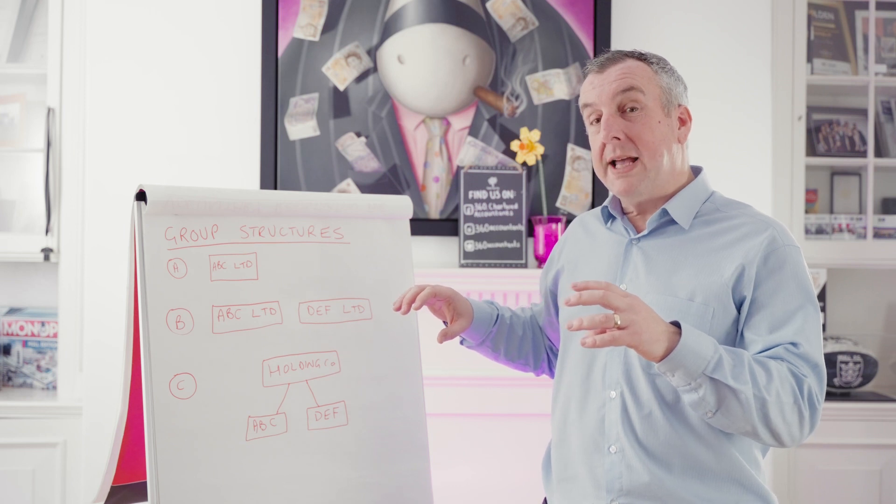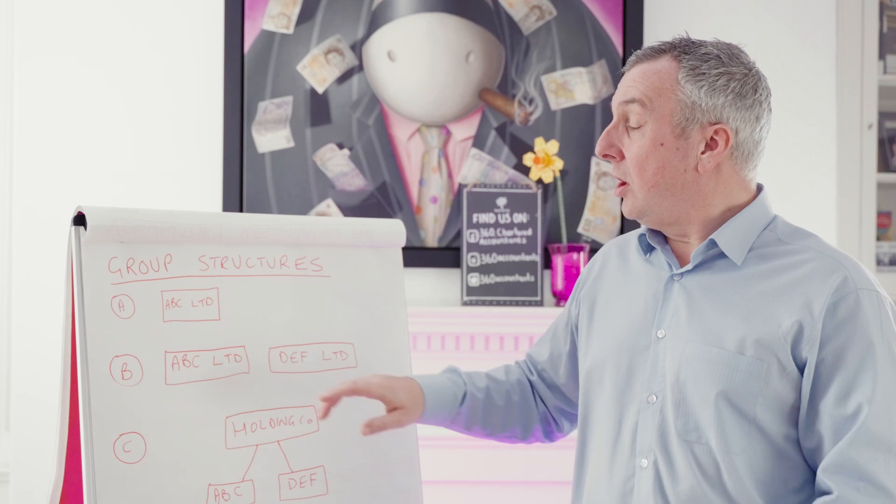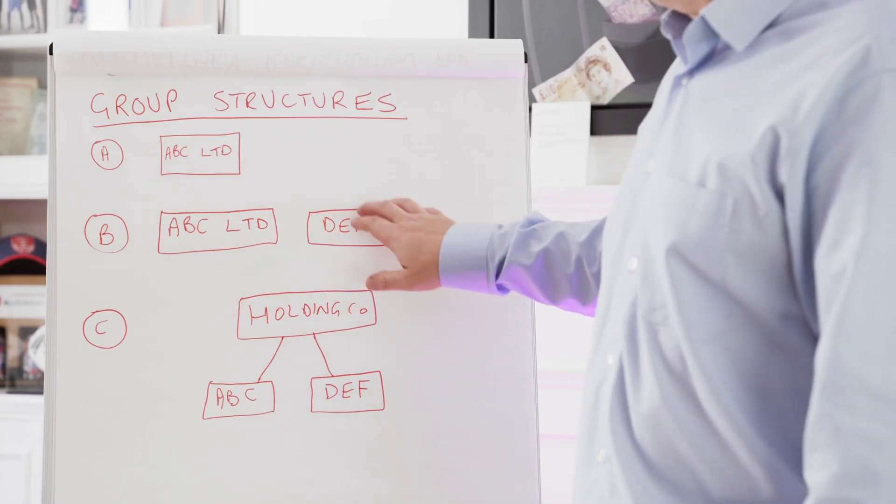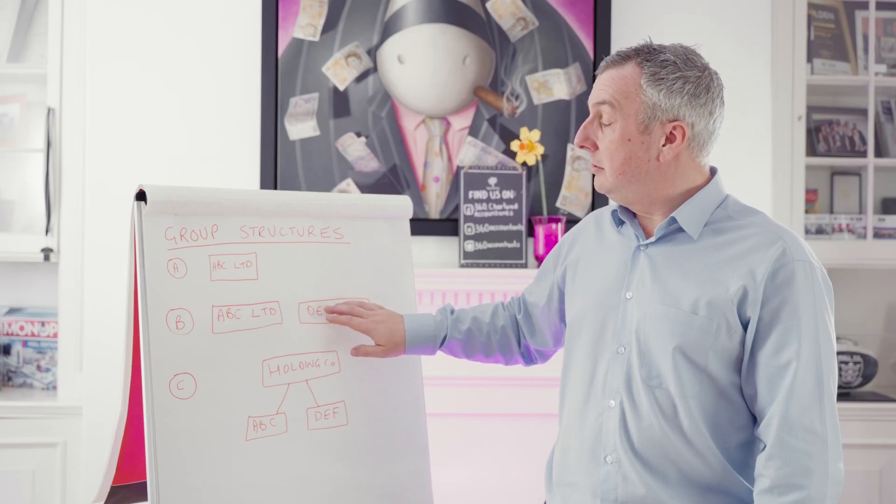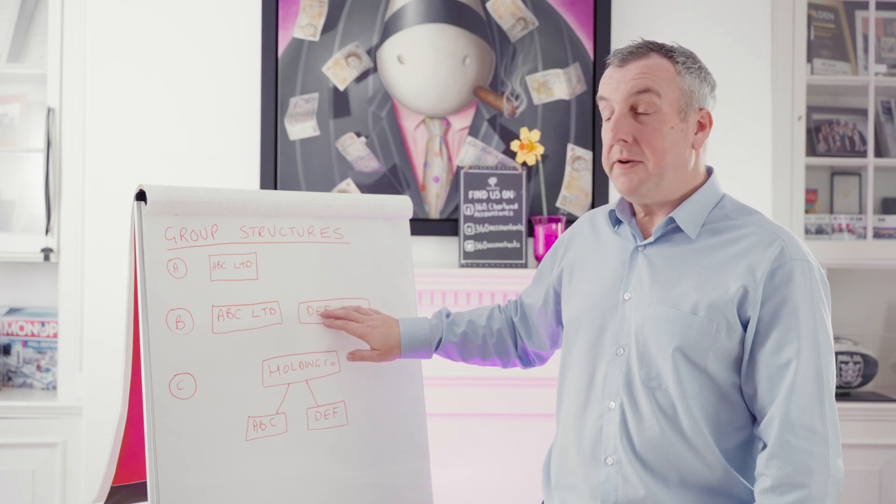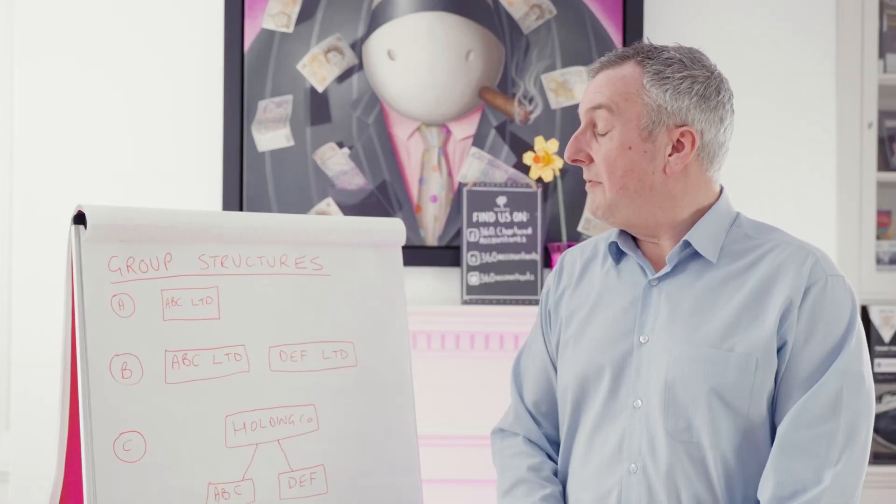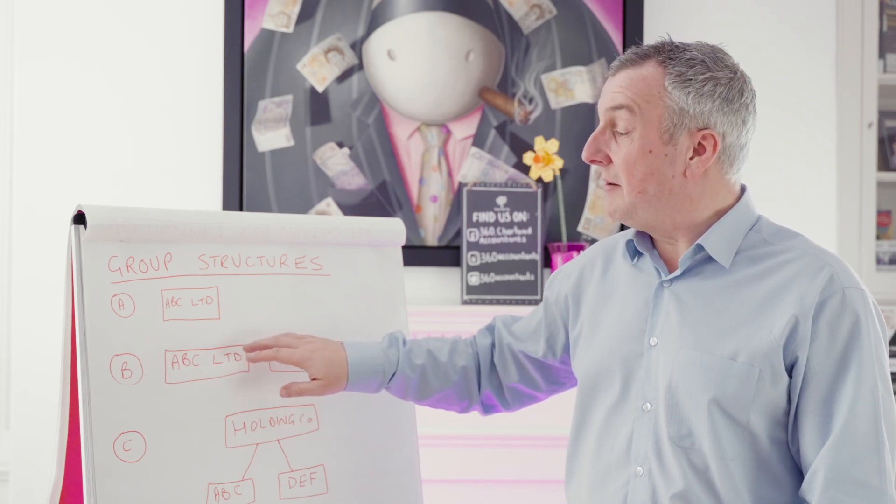It makes tracking the performance of each of the businesses much easier. It also protects the trade of ABC should DEF run into difficulties. You'd basically liquidate DEF and ABC can carry on as normal. Having these two separate limited companies, there are some disadvantages.